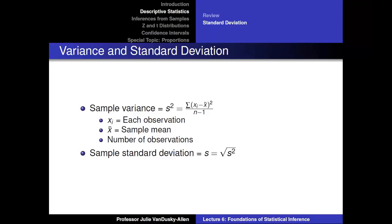We can calculate two numerical values that tell us by how much a variable's observations deviate from its mean on average: variance and standard deviation. The sample variance (s²) is the sum of each observation minus the sample mean, squared, divided by the total number of observations minus one. The sample standard deviation (s) is the square root of the sample variance.